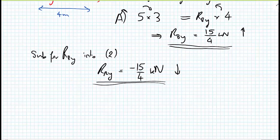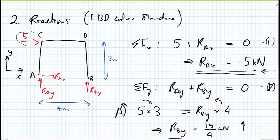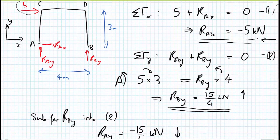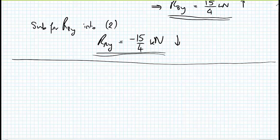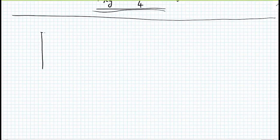We now have all the reaction forces and can move on to calculate the internal forces and moments at the joints — specifically at C and D. We'll break the structure into pieces. First, we'll consider column AC and draw a free-body diagram for it.